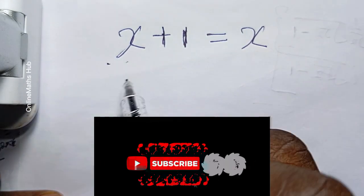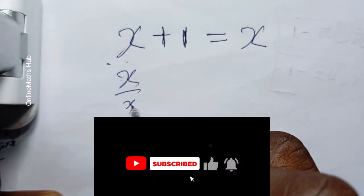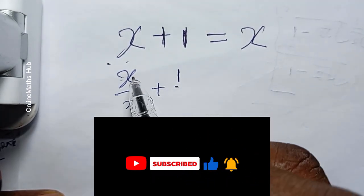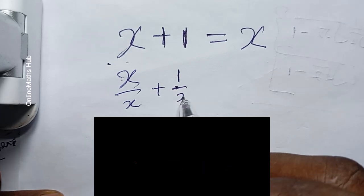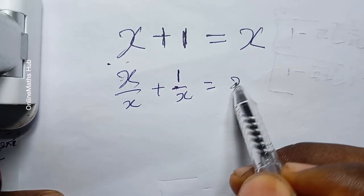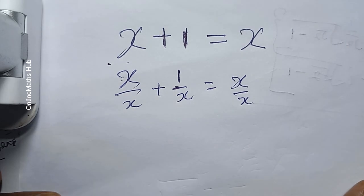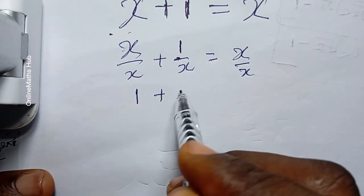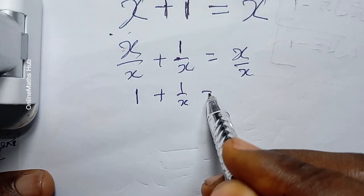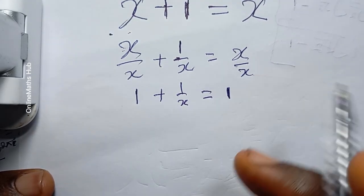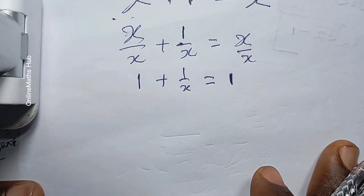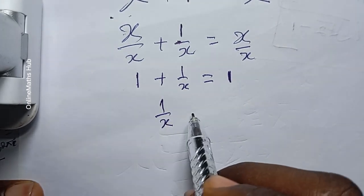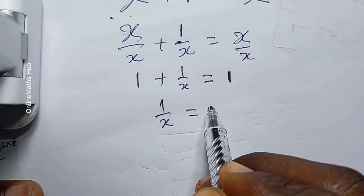Some people would want to start by just dividing through by x. If you do that, you're going to have x divided by x plus 1 over x is equal to x divided by x. So that gives you 1 plus 1 over x is equal to 1. When you move the 1 to this side, you get that 1 over x is equal to 0.